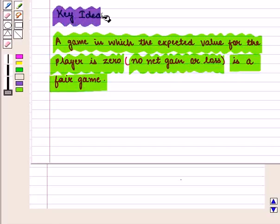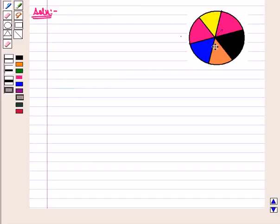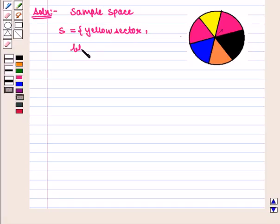With this key idea, we shall proceed to the solution. In this question, we are given a spinner with 6 sectors with equally likely possibilities. It means there are 6 equally likely outcomes. Its sample space S is given by the set containing yellow sector, blue sector and 4 other sectors.